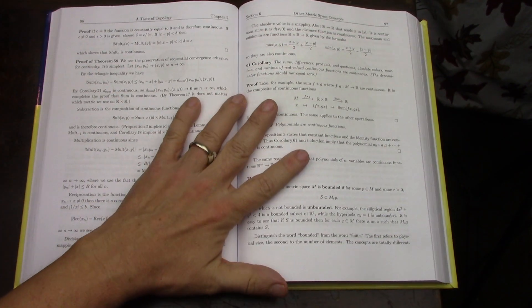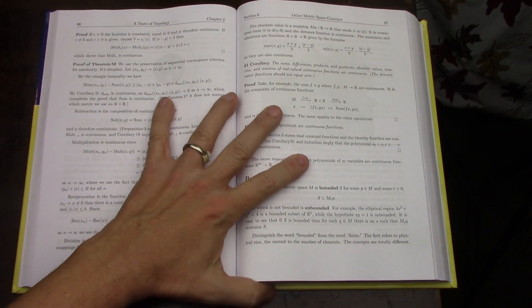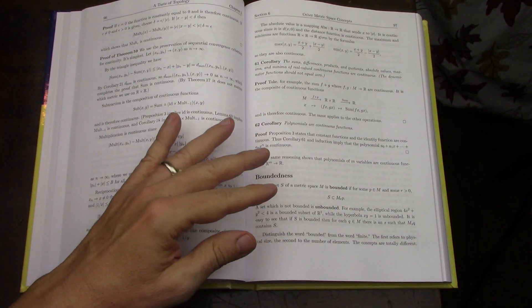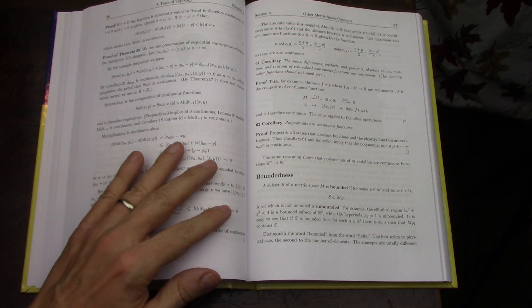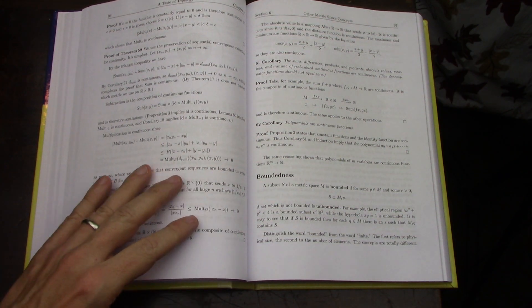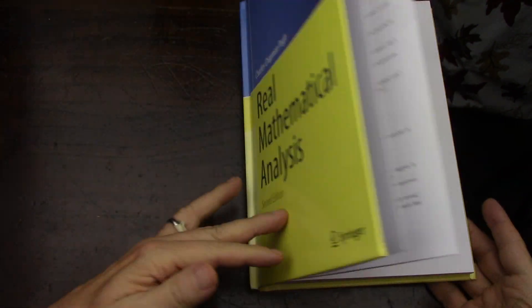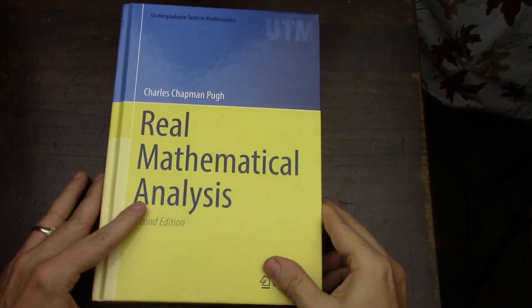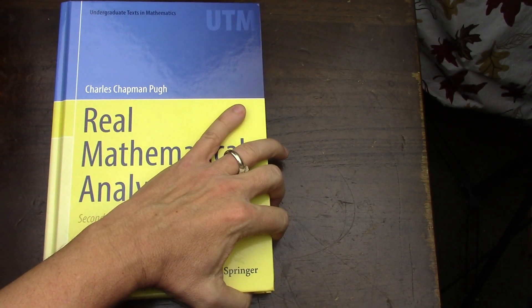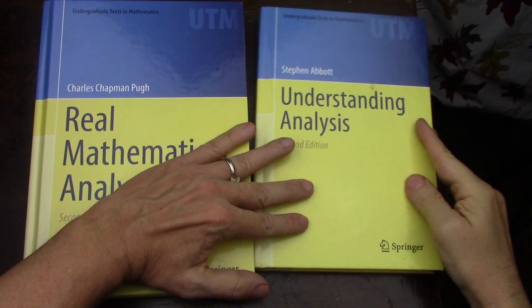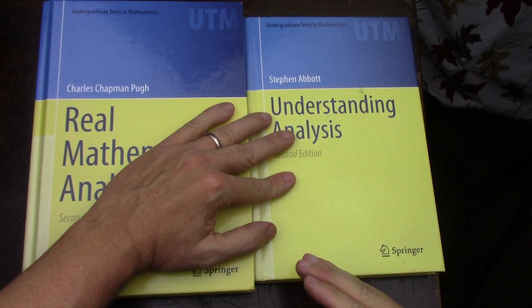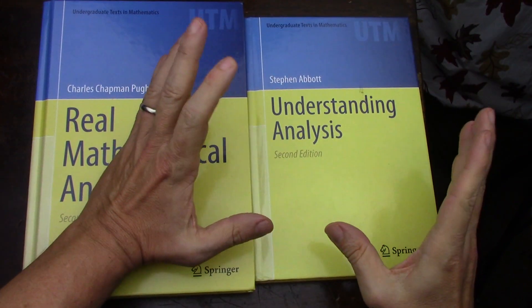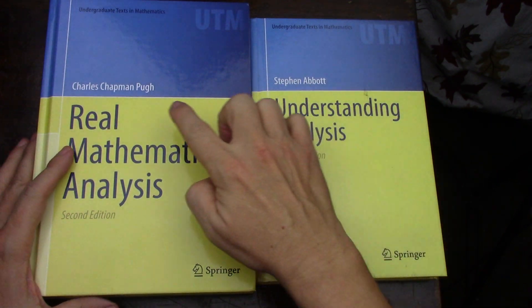Now I almost thought of doing a really serious comparison with Baby Rudin, but then I chickened out just because that's a lot of work. So, but right at this point today, you know, fall of 2024, I would say that the Along the Way of Baby Rudin Club is these two books, Abbott and Pugh.